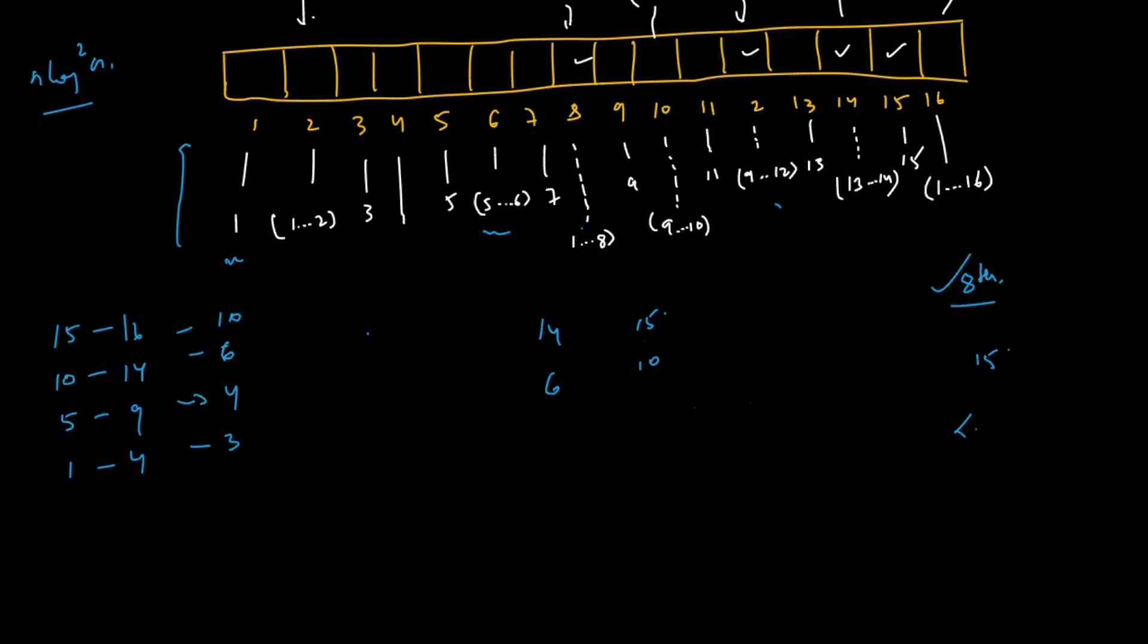If somehow I can find the highest index which gives prefix sum less than 8, because 14 gives prefix sum less than 8, that means there are 6 elements less than equal to 14. So if I can find the highest index, that means 14.